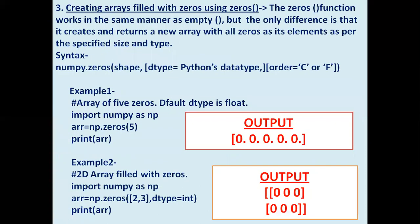The next way is creating arrays filled with zeros using the zeros function. The zeros function works in the same manner as the empty function — same syntax — but the only difference is that it creates and returns a new array with all zeros as its elements as per the specified size and type. If you specify int, you will have zeros without a decimal point; if float, zeros with a decimal point.